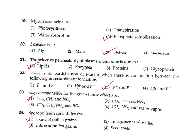So for selective permeability, the main reason is lipids — Option 1. Question 22: There is no participation of the F factor when conjugation occurs between which of the following? Wherever HFR or F+ is present, the F factor will be involved. Option 3 — F minus — is where the F factor is not involved. Correct answer Option 3.